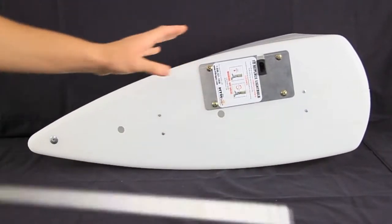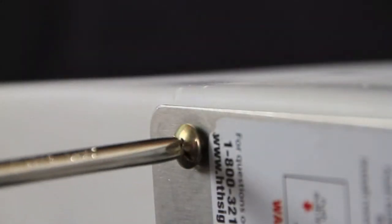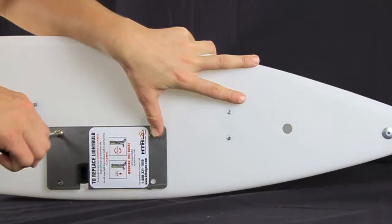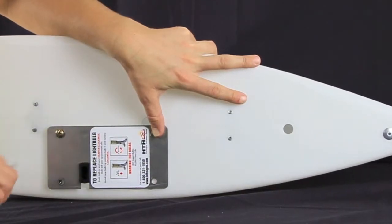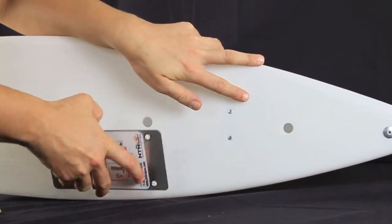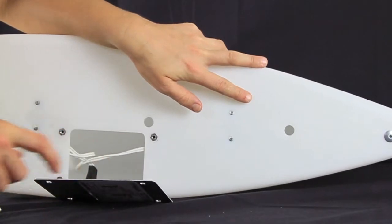Next, remove the bracket from the sign and then begin unscrewing the metal plate located on the bottom side. When the four screws have been removed, you can pull the plate away from the plastic sign, giving you access to the inside.